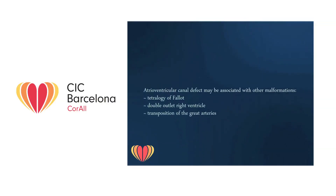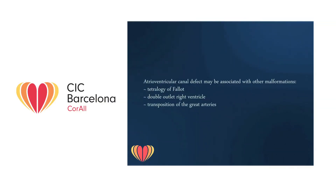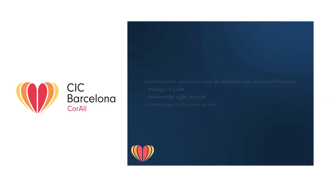Atrioventricular canal defect may be associated with other malformations such as tetralogy of Fallot, double outlet right ventricle, transposition of the great arteries, etc. In those cases, surgical treatment should be performed in two stages: firstly palliative surgery (shunt, pulmonary artery banding, etc.) and then corrective surgery.